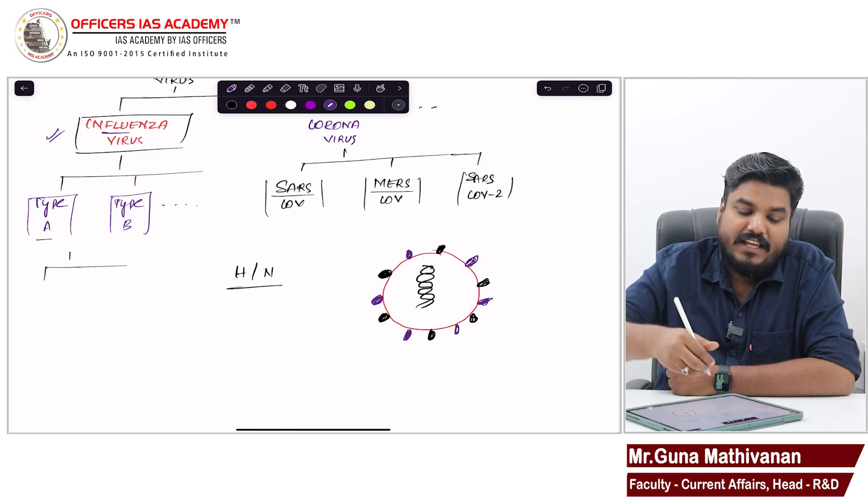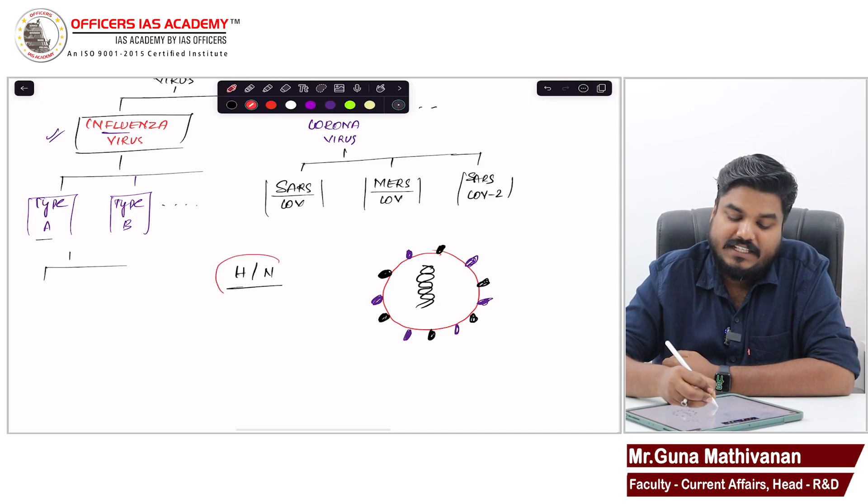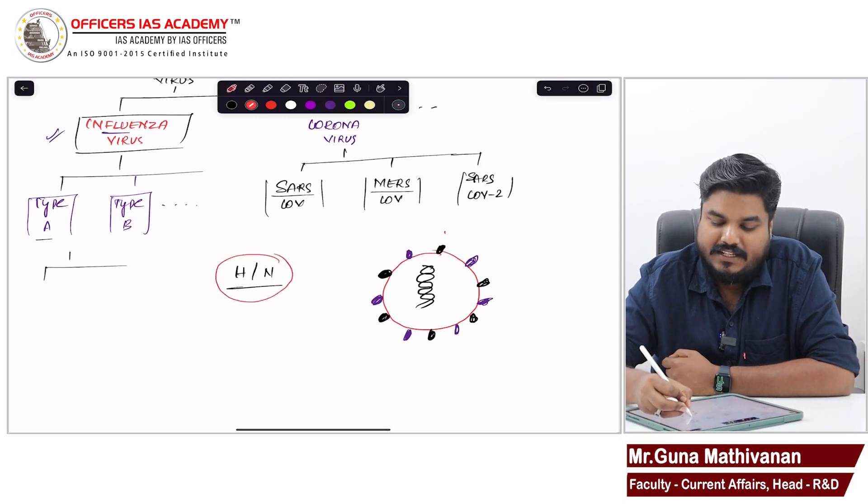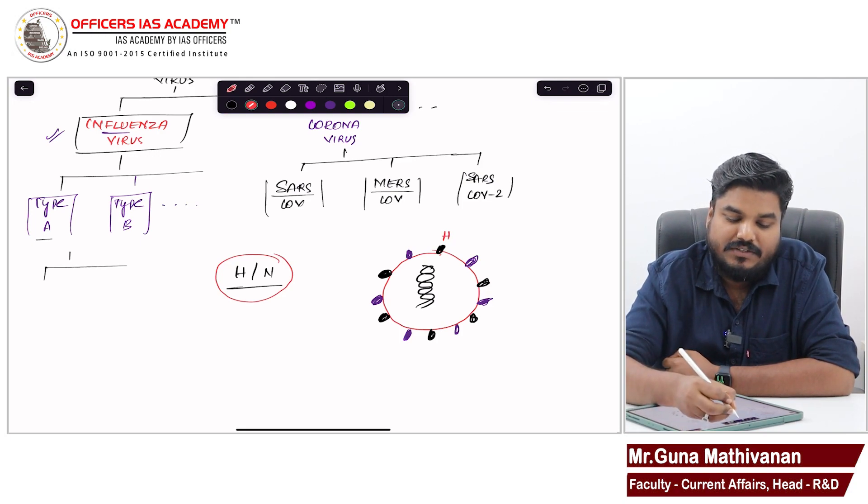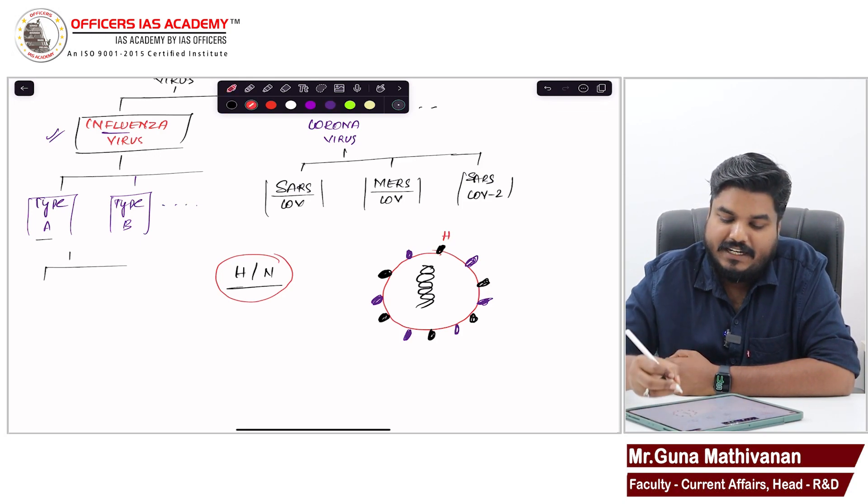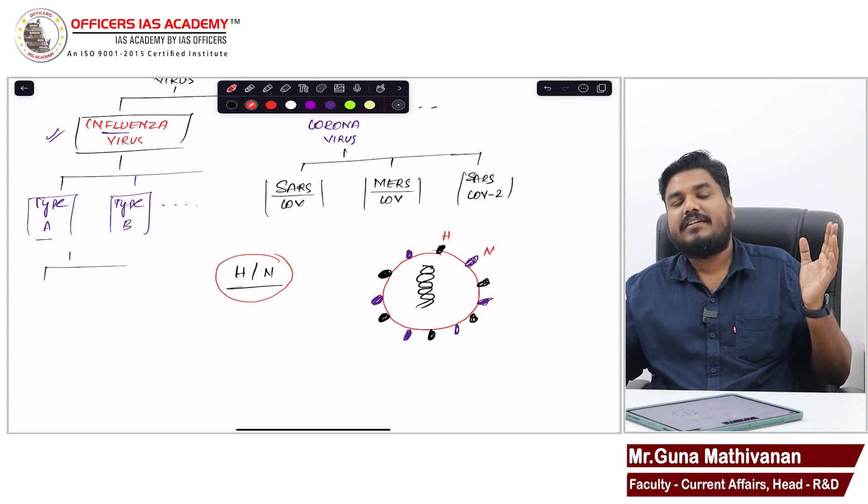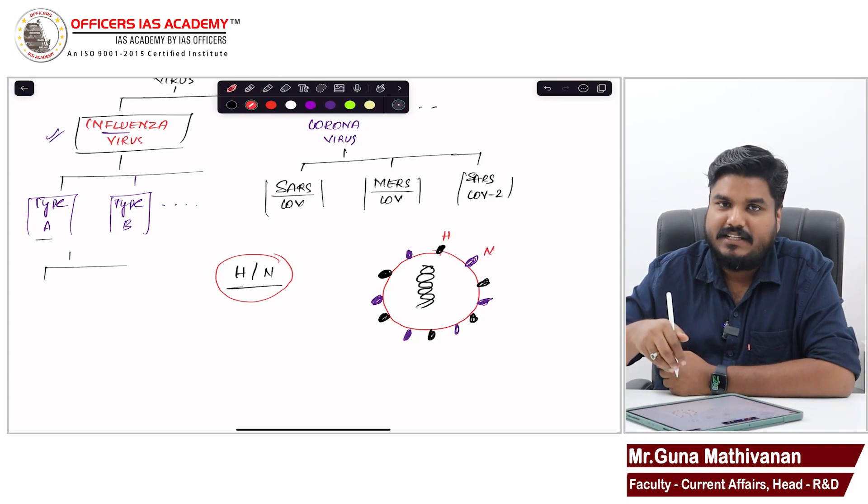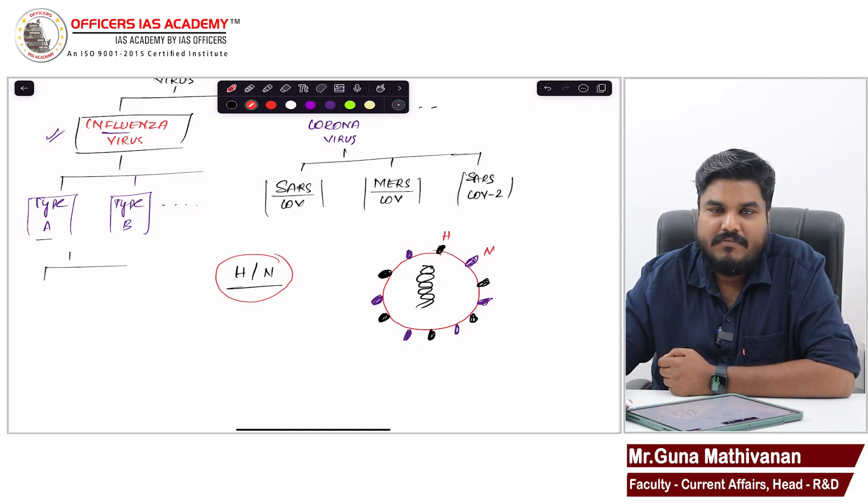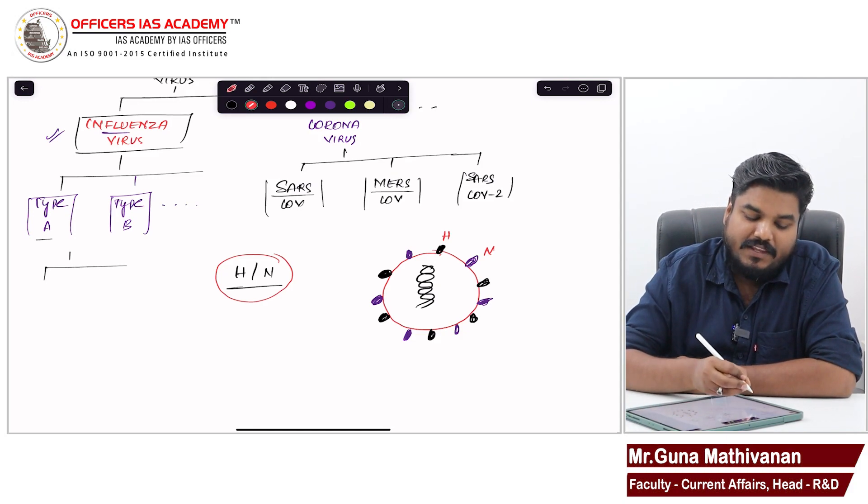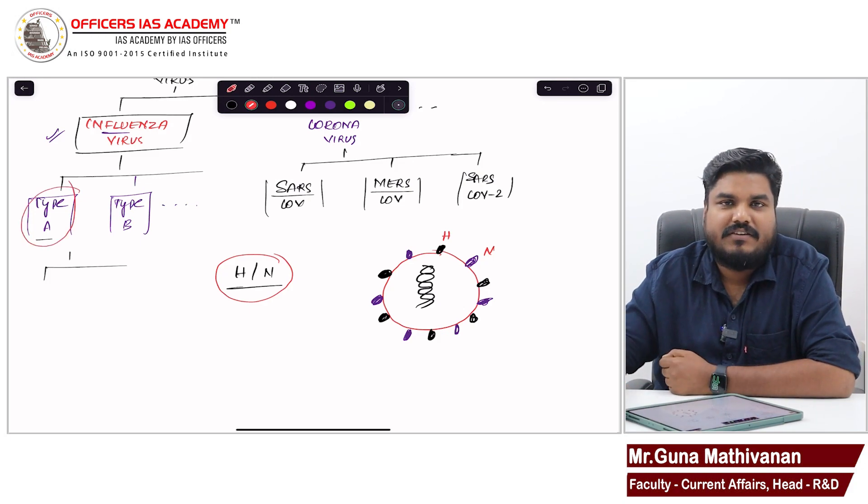Based on the type of protein, we can classify the virus. If a virus contains H type and N type proteins, then we will say it is a type A influenza virus. There are multiple types of these proteins.